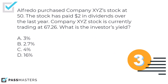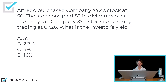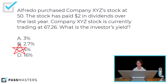Last question: Alfredo purchased company XYZ's stock at $50. The stock has paid $2 in dividends over the last year. Company XYZ's stock is currently trading at $67.26. Stocks trade in dollars and cents. What is the investor's yield? He received $2 — divided by what he paid for the stock, not the current market price. $2 divided by $50 is 4%.